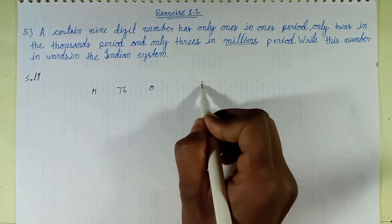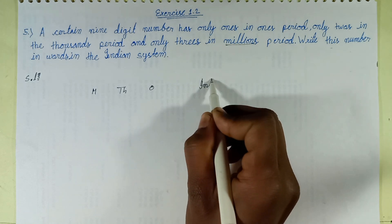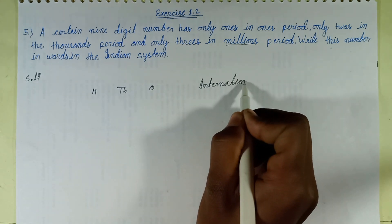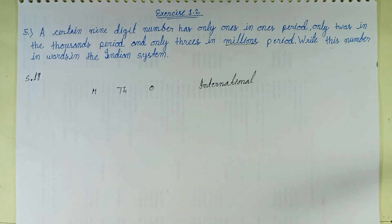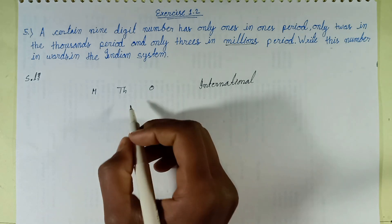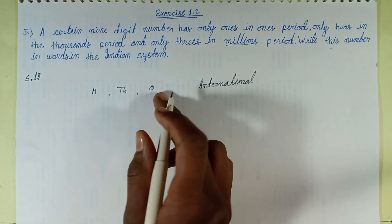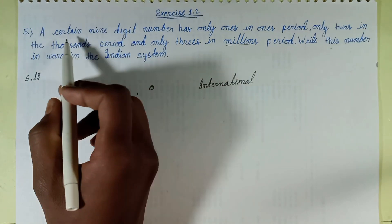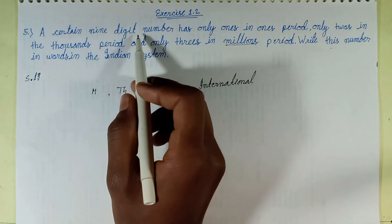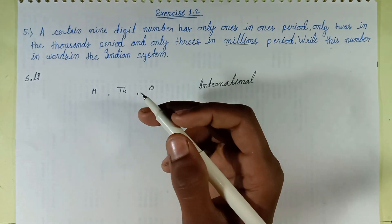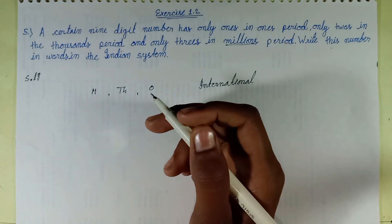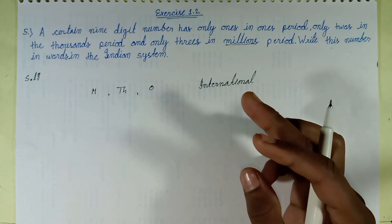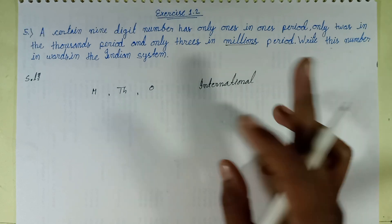This question is given in the International System of Numeration, where the ones period, thousands period, and millions period are used. In the International System of Numeration, numbers are grouped in sets of 3 digits per period. A certain 9-digit number would be 9,000,000,000 digits long — each period contains a group of 3 digits.